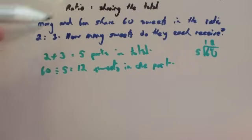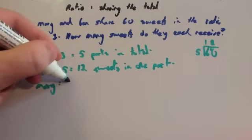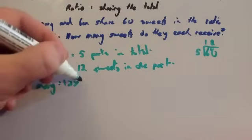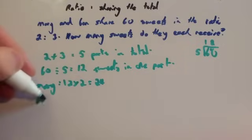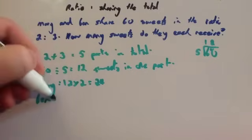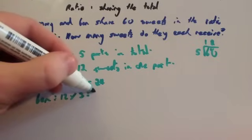Now, Mary gets 2 parts, and Ben gets 3 parts. So for Mary, you're going to do 12 times 2. So she's going to get 24 sweets. And Ben, he gets 3 parts. So you're going to do 12 times 3, which equals 36 sweets.